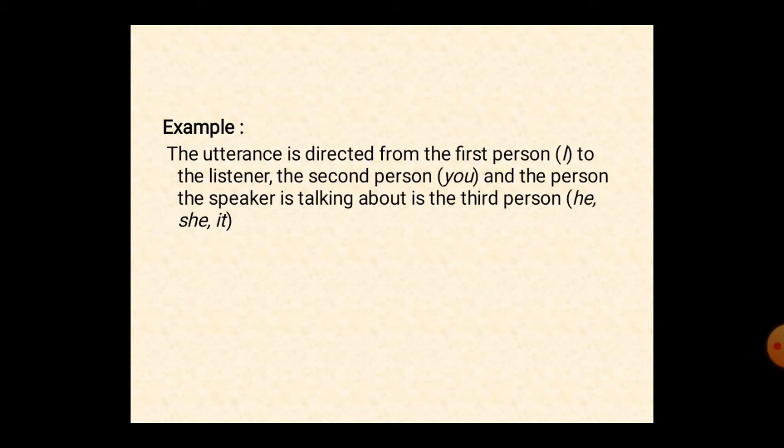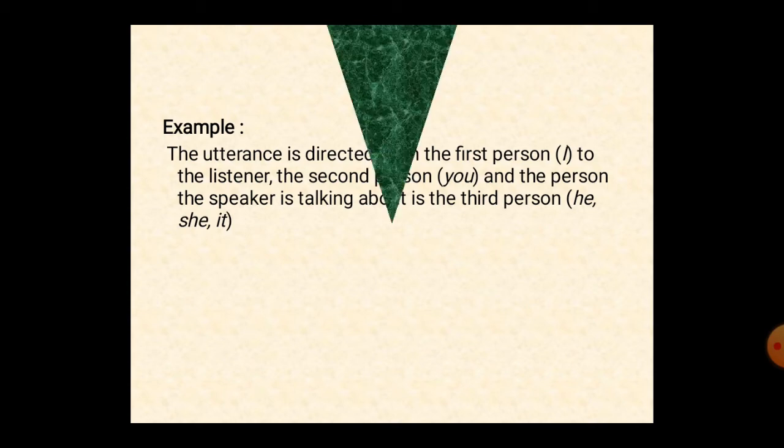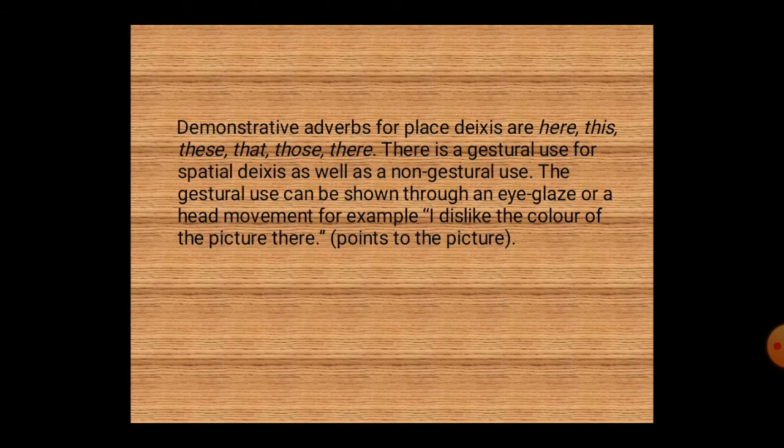Next is place deixis. Place deixis is also called spatial deixis. This explains location, objects, and people. Demonstrative adverbs for place deixis are here, this, that, those, and there.